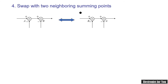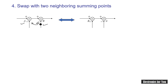The fourth rule is swapping of two neighboring summing points. If summing point A and summing point B are directly connected to each other, we can interchange their positions. The signs also remain as they are — if B has a positive sign it stays positive, and if it is negative it remains negative.